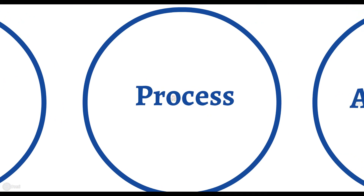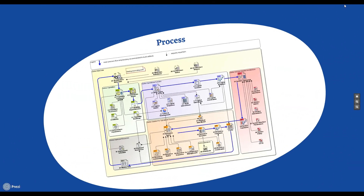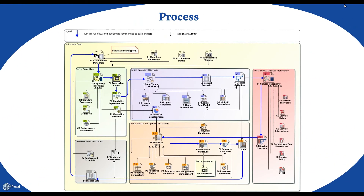Before modeling, every organization must define not only a proper structure but a suitable process too. The blue arrow demonstrates the main process while the smaller arrow shows required inputs. Architecture is usually created using a top-down approach that progresses from the abstract view to the detailed sub-view.